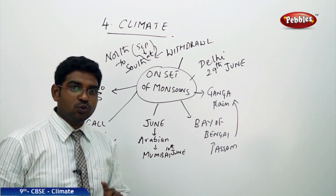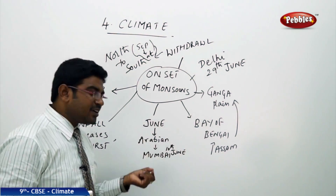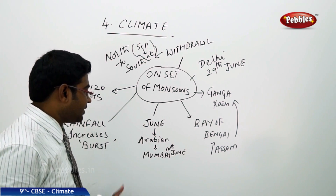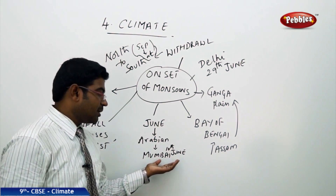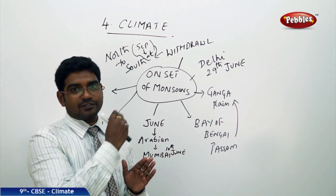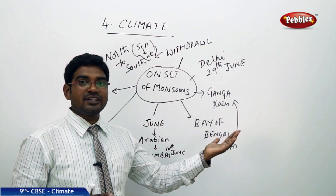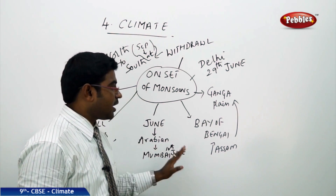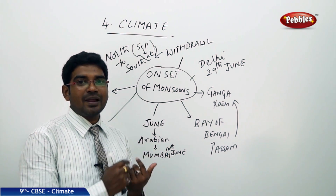The monsoons first arrive in the month of June on the Arabian coast, then divide towards the Arabian Sea coast and the Bay of Bengal coast. The first showers are experienced at the southern tip of India in Kerala, later moving up to Mumbai and the Konkan coast, then to the Rann of Kutch, reaching these areas by around the 10th of June. The Bay of Bengal branch also brings monsoons, sending them directly to the Assam region.